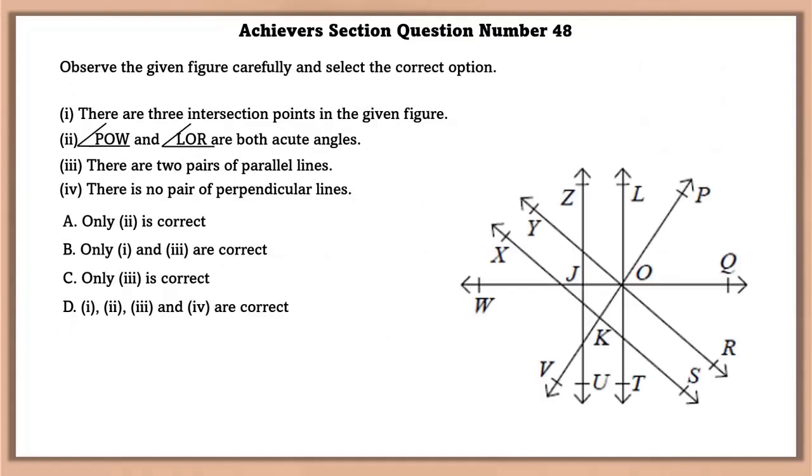Achievers section question number 48. Observe the given figure carefully and select the correct options. There are three intersecting points in the given figure. No, there are six intersecting points in the given figure.